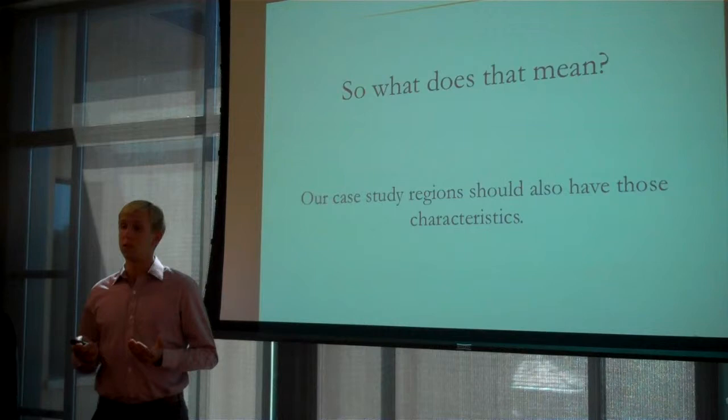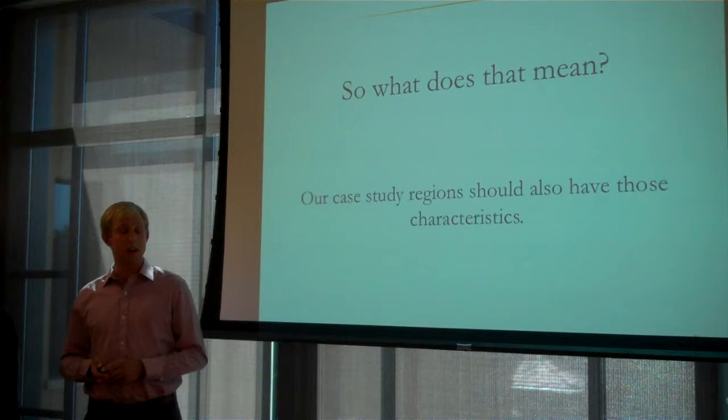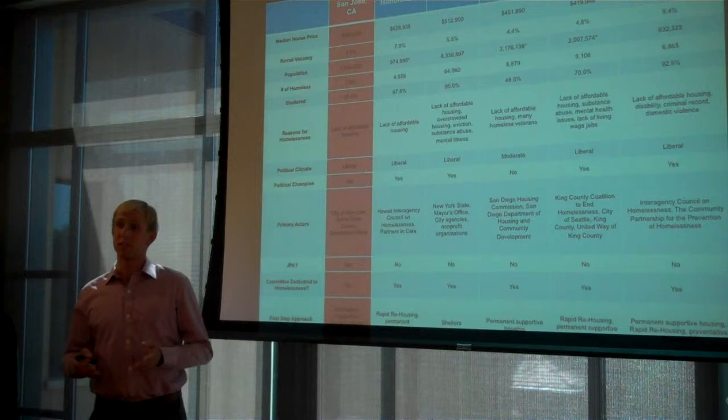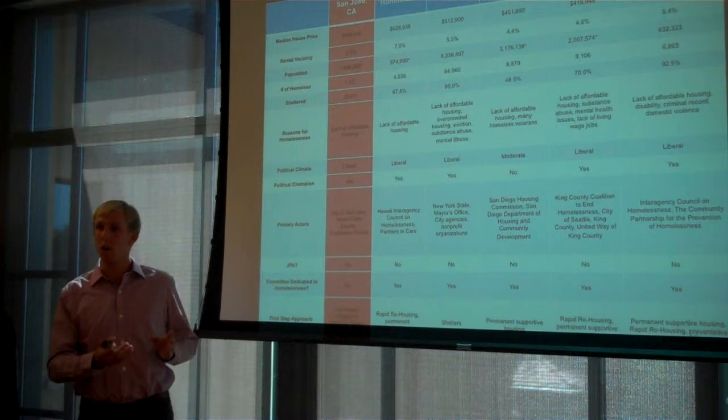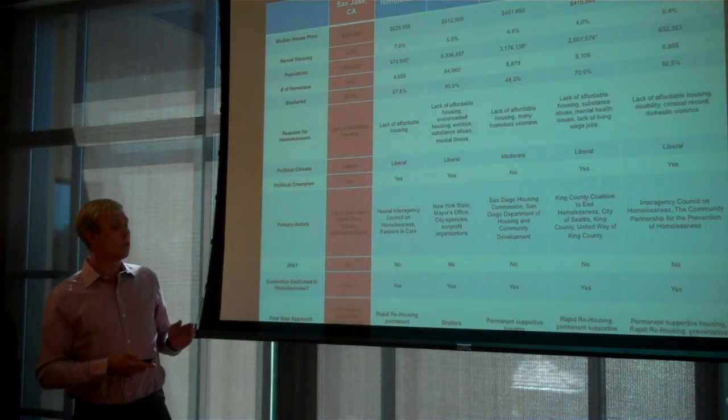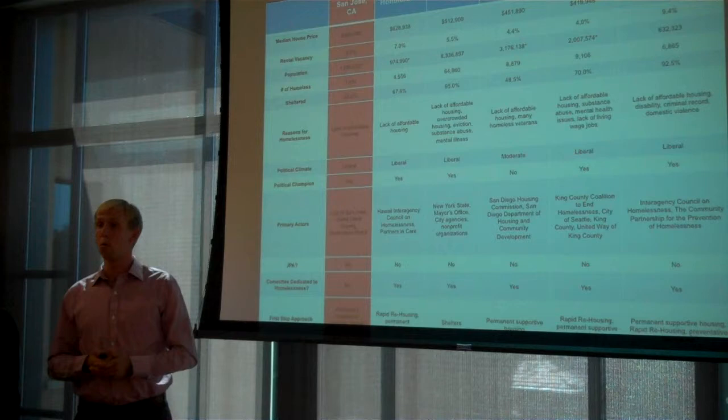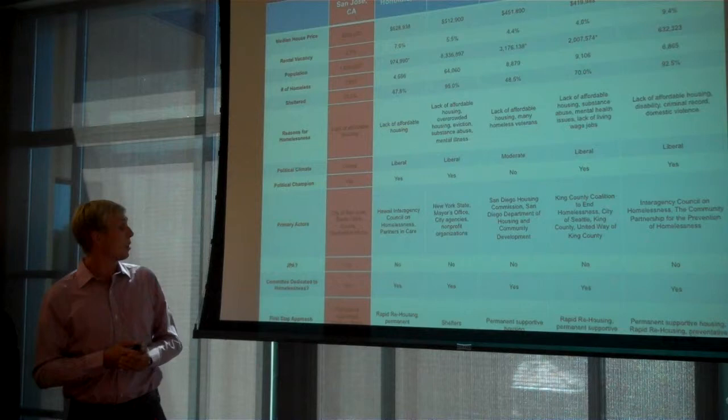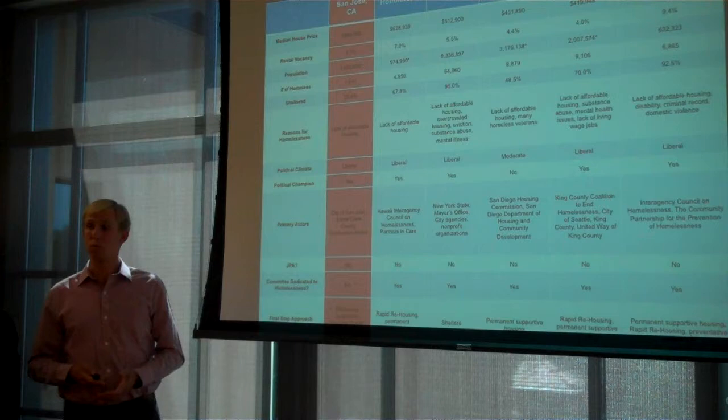So what this all means is that we need to find the regions that best fit Silicon Valley's distinguishing characteristics. So we created this big matrix to try and make sense of all of this. And this is just a snapshot of part of it. What I want to draw attention to is not the specific figures here, but just that we had an analytical approach. We tried to really break it down and highlight some of the most important factors. As you can see, median house price is one of those. Whether they actually had a committee that was dedicated to homelessness. These were a couple of the things that we wanted to keep in mind as we tried to find the best fits.